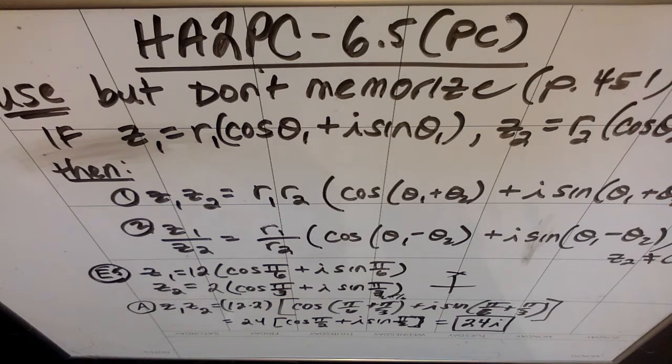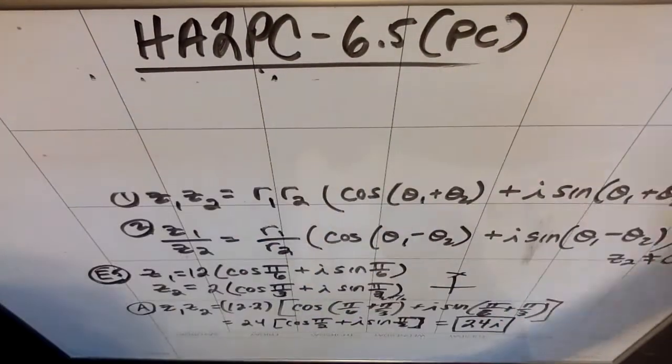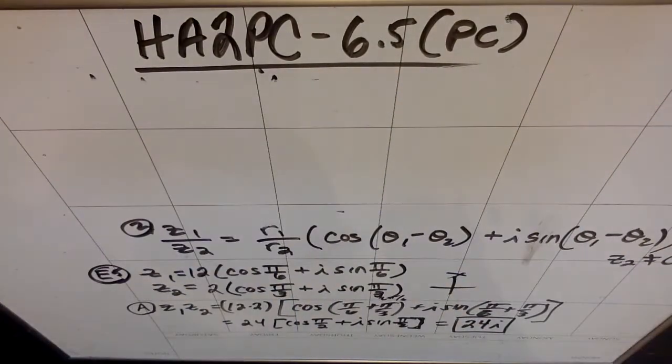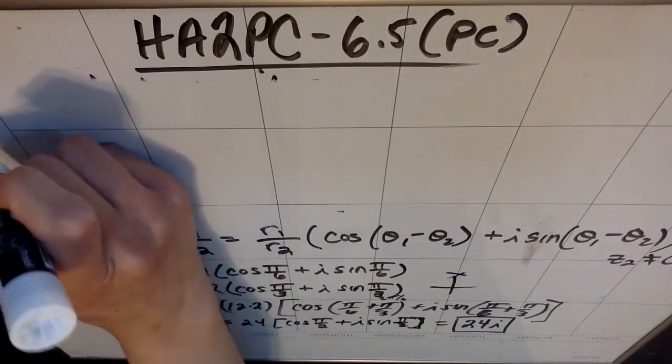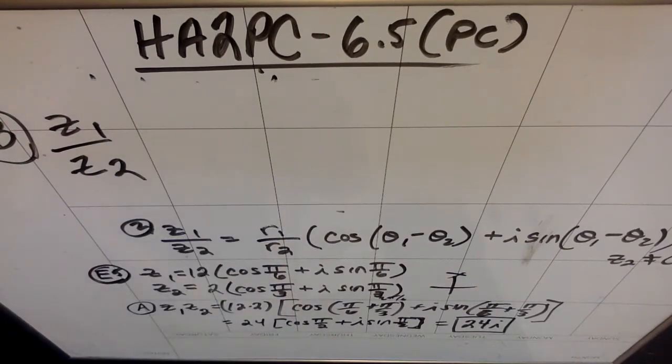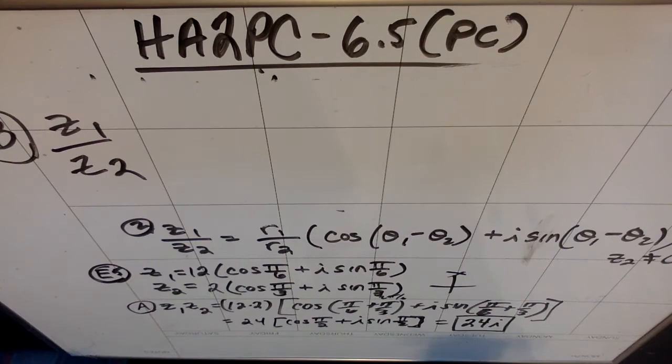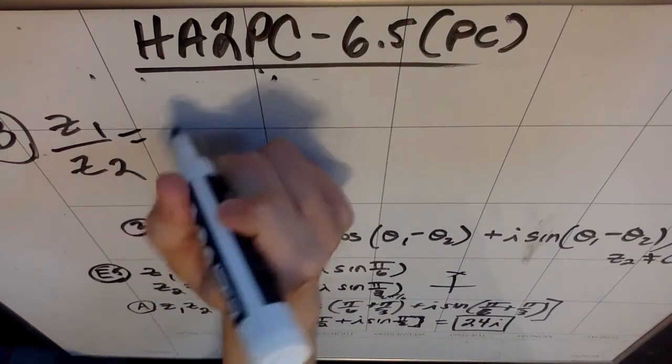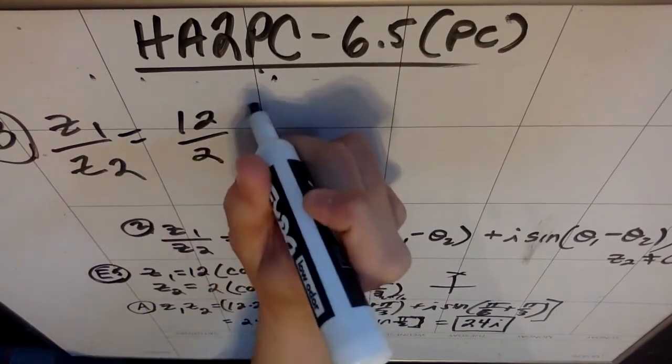I'm going to do the same thing with division. I'm going to erase at the top because I don't have a ton of space. Do the same thing with division. Again, you don't have to have this formula memorized, you just have to be able to use it. I'm going to do z1 divided by z2. So when I do z1 divided by z2, I'm going to do 12 divided by 2, and then in my parentheses, cosine of the theta 1, which is pi over 6, minus the theta 2, which is pi over 3.